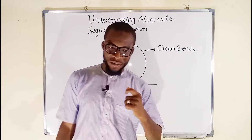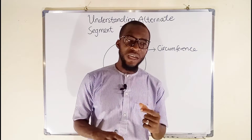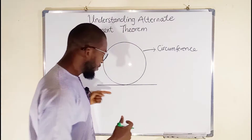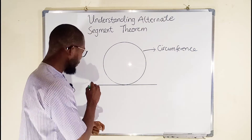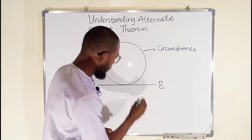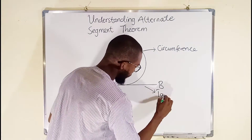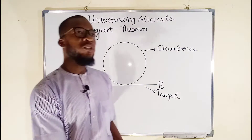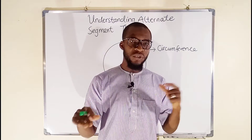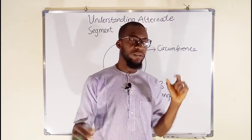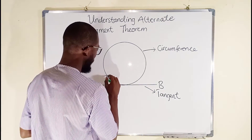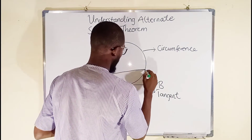We also need a tangent. A tangent is any line that touches the circumference at exactly one point. So this is a tangent — let me label it as AB. We also need a chord. A chord is a line that passes through a circle touching the circumference at two points, so it could be a diameter or any other line. This is a chord.